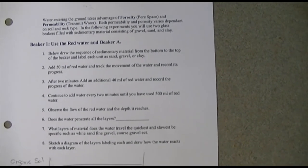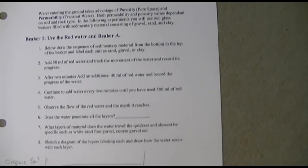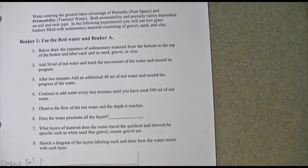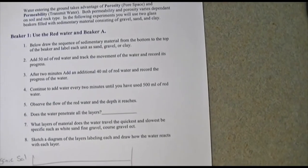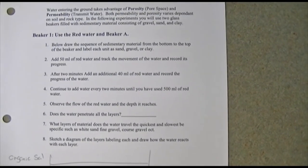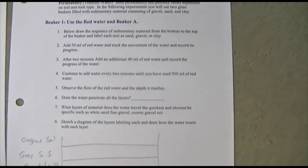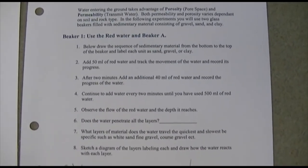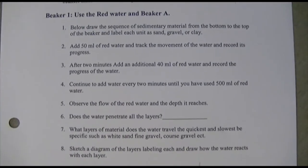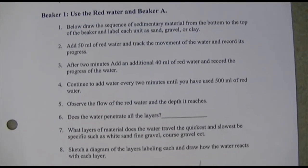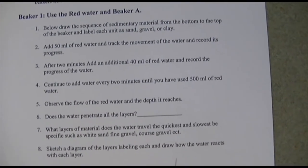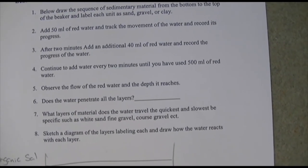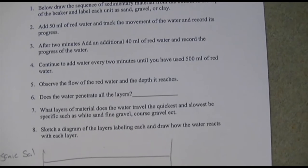For the experiments, we'll use two glass beakers filled with sediments consisting of gravel, sand, clay, and water. We're going to pour water through those beakers and look at how the rates of flow vary. The first task is to draw a sequence of sedimentary material from the bottom to the top of each beaker and label each unit as sand, gravel, or clay.